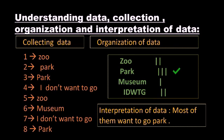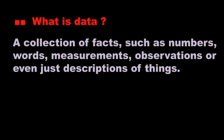Now, what is data? A collection of facts such as numbers, words, measurements, observations, or even just descriptions of things is known as data. A collection of facts such as numbers, words, measurements, observations, or even just descriptions of things is known as data.